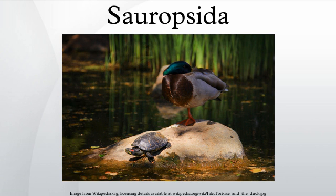Sauropsids evolved from basal amniote stock approximately 320 million years ago in the Paleozoic era. In the Mesozoic era, sauropsids were the largest animals on land, in the water, and in the air — the Mesozoic is sometimes called the Age of Reptiles. 66 million years ago, the large-bodied sauropsids died out in the global extinction event at the end of the Mesozoic era; with the exception of a few species of birds, the entire dinosaur lineage became extinct.